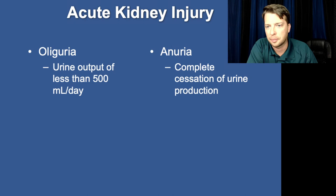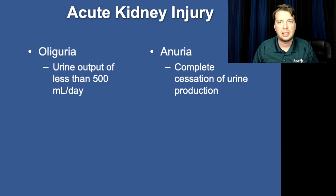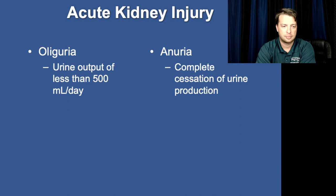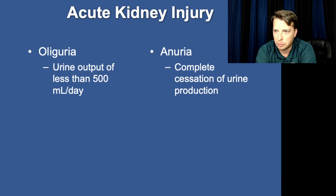Oliguria — producing urine less than 500 milliliters a day — decreased urine production. In this lecture we are calling a decreased urine output oliguria — do not select the term dysuria. Anuria is the total loss — no urine production whatsoever.